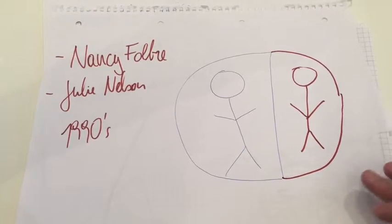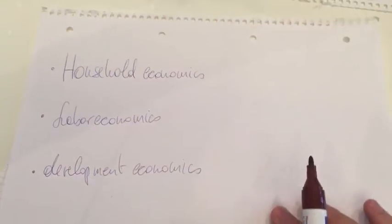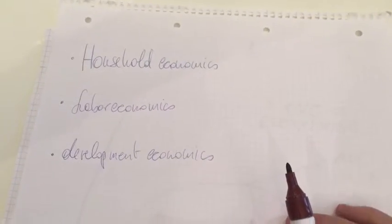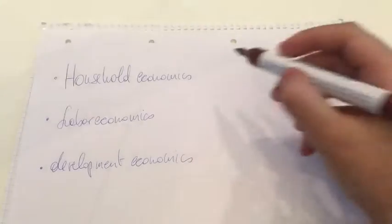Feminist economics are not only an abstract theoretical framework. Their critiques and contributions can be seen in many branches of economics. Examples of those branches—household economics, labor economics, development economics—have been topics where feminists have already contributed a lot in showing an alternative perspective to the neoclassical view.